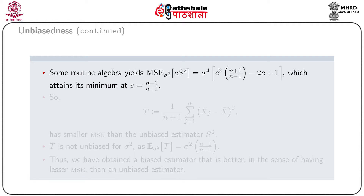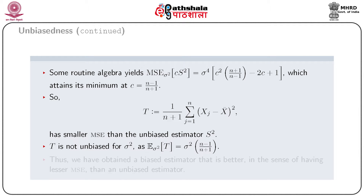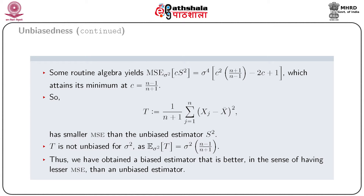Differentiating h(c) with respect to c, we get h'(c) = σ⁴ · [2c(n+1)/(n−1) − 2]. Setting h'(c) = 0, we get c = (n−1)/(n+1). Hence the optimal estimator is T = (1/(n+1)) · Σᵢ(xᵢ − X̄)². Clearly, T has the minimum MSE among all estimators of the form c · S². But T is not unbiased for σ², since E[T] = ((n−1)/(n+1)) · σ². Hence T is a biased estimator of σ² having smaller MSE than the unbiased estimator S².